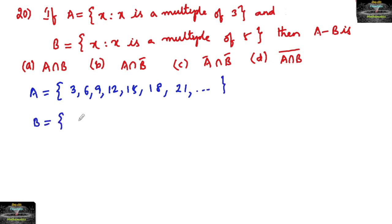And B we can write it as multiples of 5. So 5, 10, 15, 20, 25 and so on.